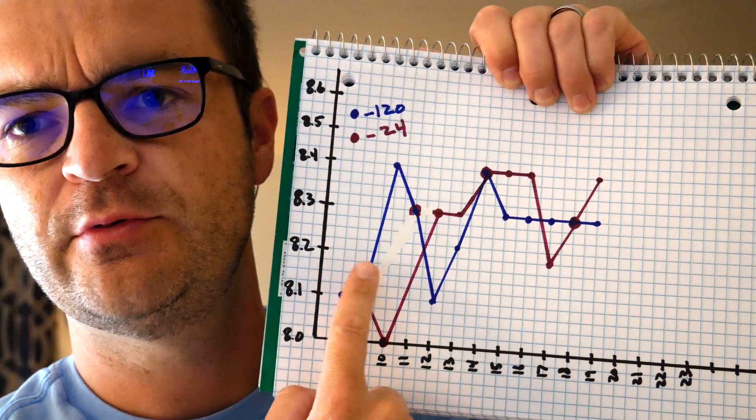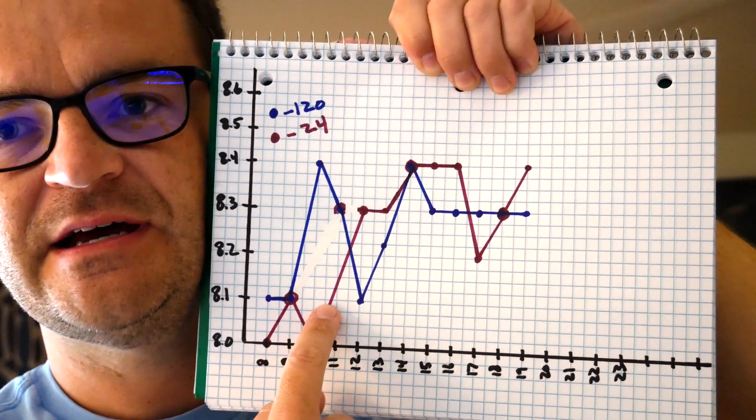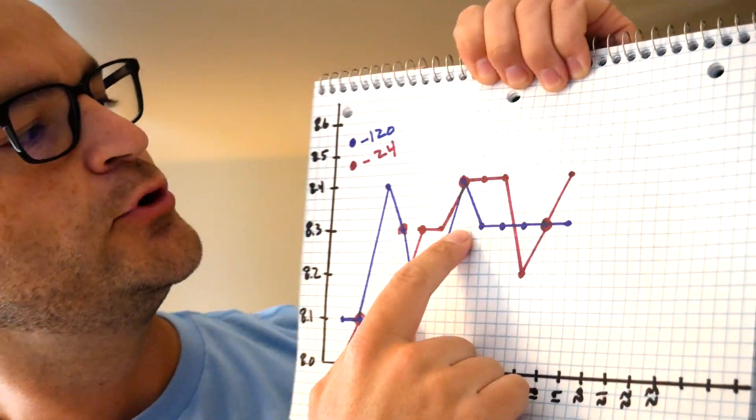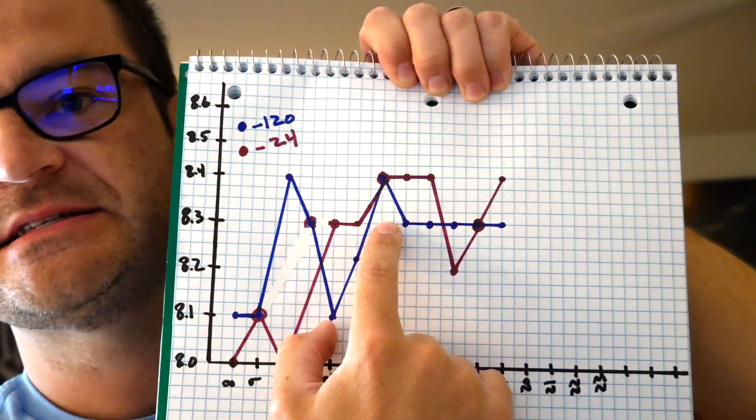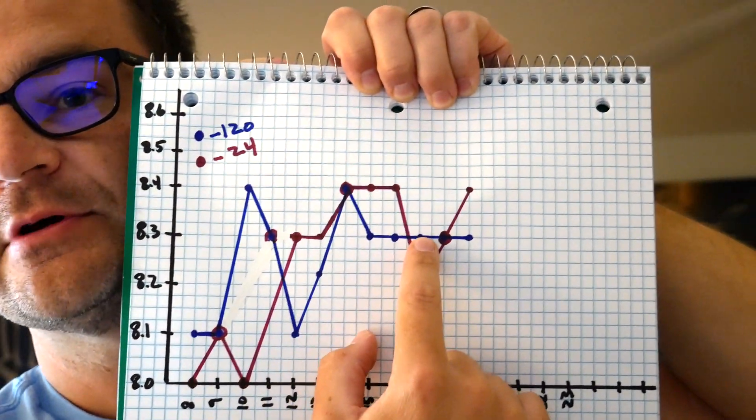But it really does even out both the tanks here. I mean, you can see the blue line, which is 120-gallon, had several hours of exactly the same, and what is that, 8.3.